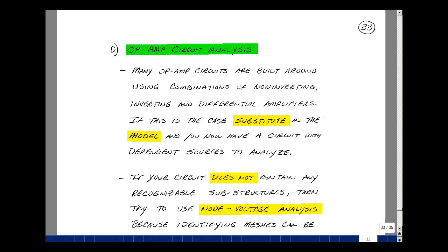There are many op-amp circuits that use non-inverting, inverting, and differential amplifiers. If you're trying to analyze one of these circuits, all you would need to do is substitute the model that we've developed, and you've reduced your circuit to one that just contains dependent sources, and you can use the methods that we've talked about in Chapter 4. But suppose your circuit doesn't contain one of these substructures. What do we do in terms of analyzing the circuit?